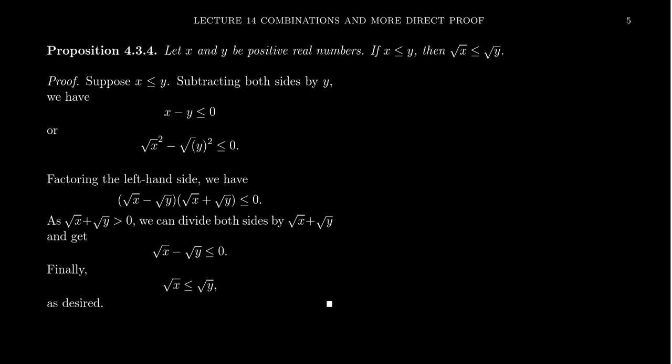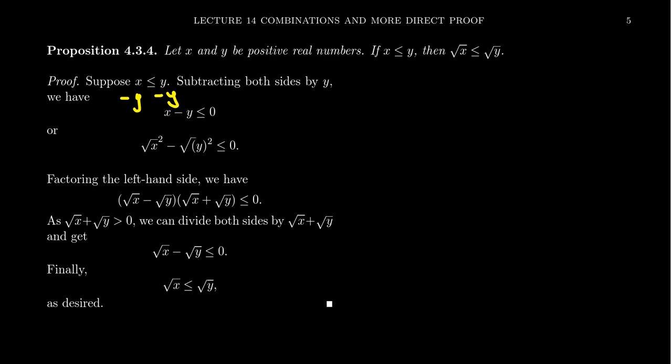From there, we'll apply definitions when necessary and unravel things. We know that x is less than or equal to y. If we manipulate this algebraic inequality, perhaps we can produce the inequality we're looking for — if one inequality is true, then another inequality with the same variables is also true. Subtracting y from both sides, we get x minus y is less than or equal to zero. When writing a proof, we have to describe such steps with words, not just informal notations.